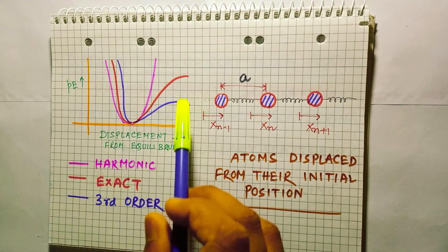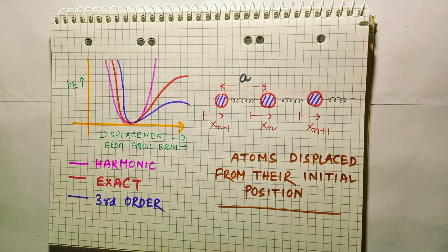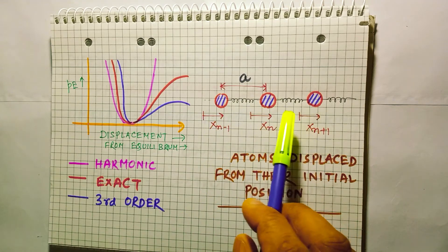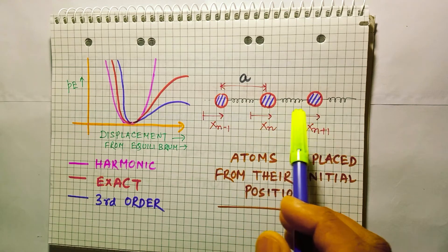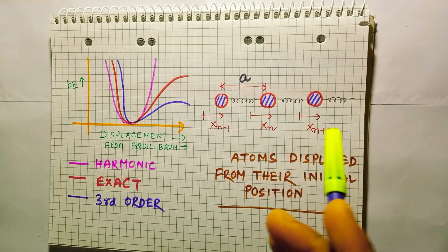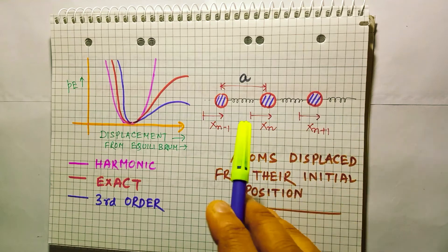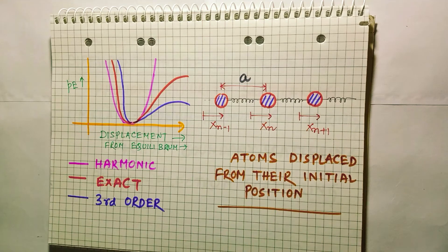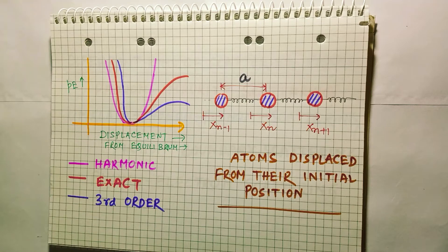This curve is the exact one, and this is called the third-order approximation, which comes from the anharmonic perturbation. The atoms are in an initial position and when displaced, they are assumed to be connected by a massless spring. When displaced from equilibrium, they tend to come back to their original position. Normal modes of vibration are the pattern of modes in which all parts of the system move with a fixed frequency and a fixed phase-space relation. Any arbitrary vibration in the lattice can be considered as a superposition of normal modes with various frequencies.